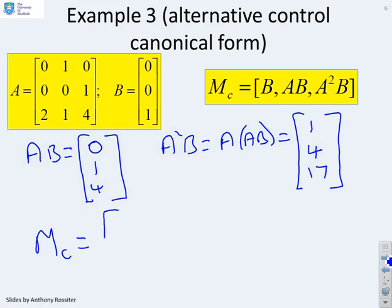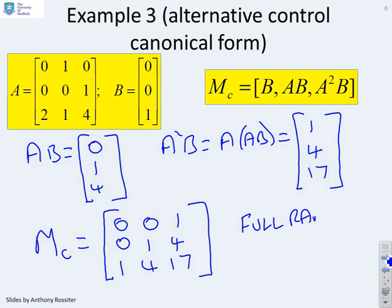And what do we get? We get 0, 0, 1, 0, 1, 4, and 1, 4, 17. So again, you can see because it's got this triangular structure, it must be full rank. And therefore, it's fully controllable as expected.